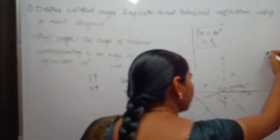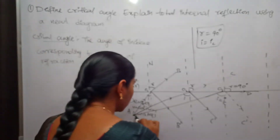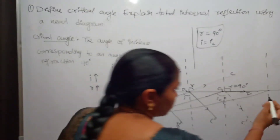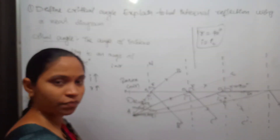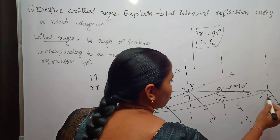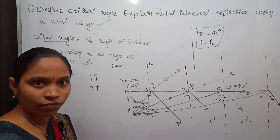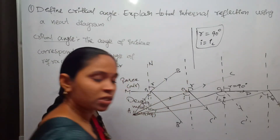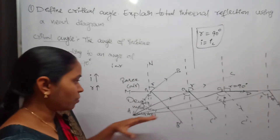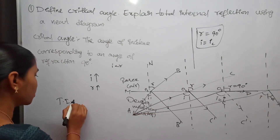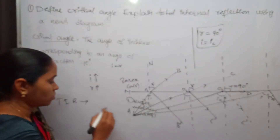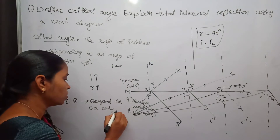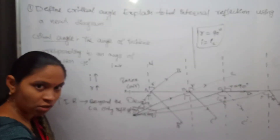If you keep on increasing the incident angle beyond the critical angle, there is no refraction — only reflection takes place. Beyond the critical angle, only reflection is possible and there is no refraction. This reflected ray is known as total internal reflection.